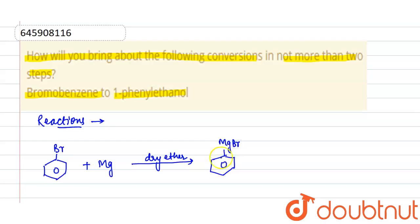This is phenyl magnesium bromide. Further, on reaction with acetaldehyde followed by water, it will form 1-phenylethanol.